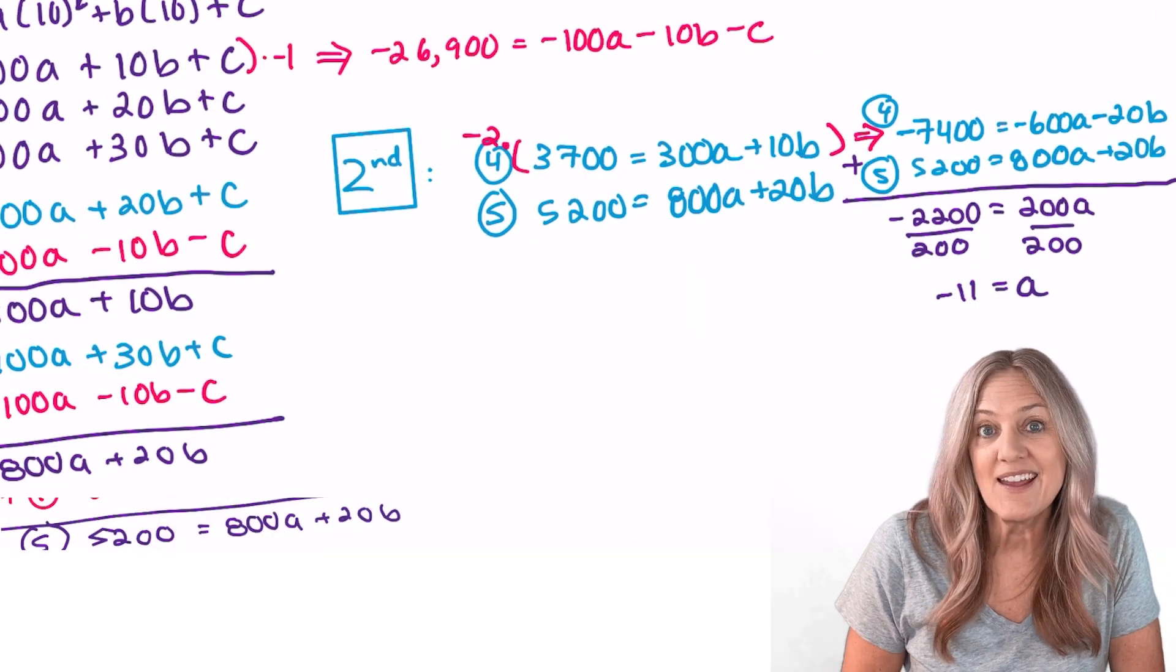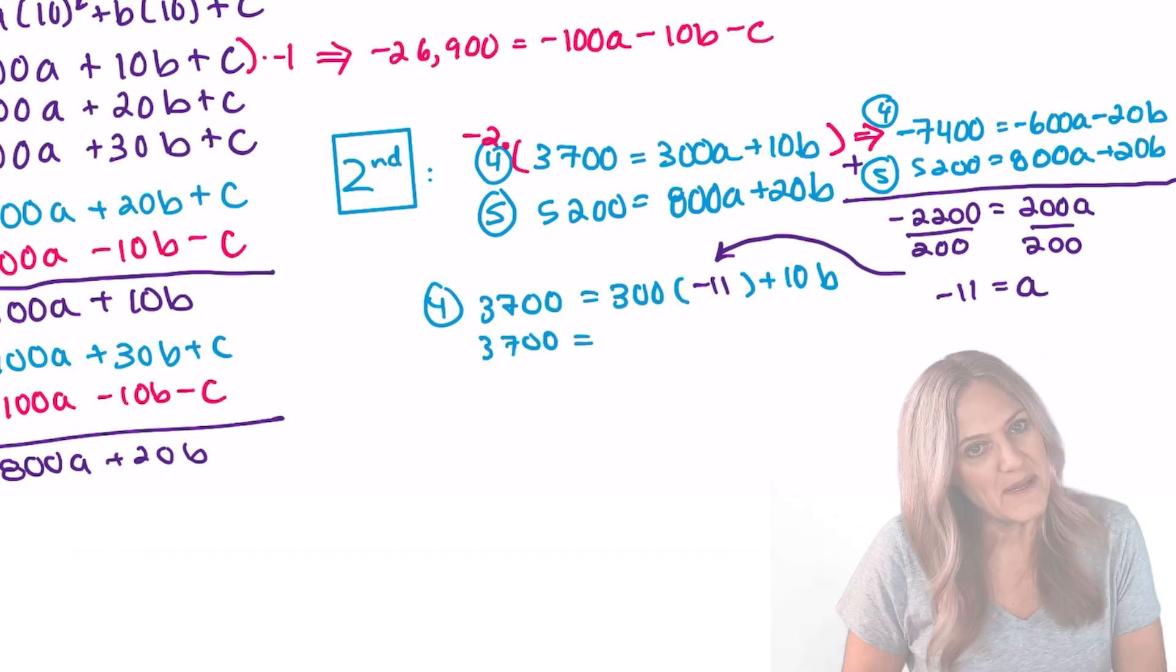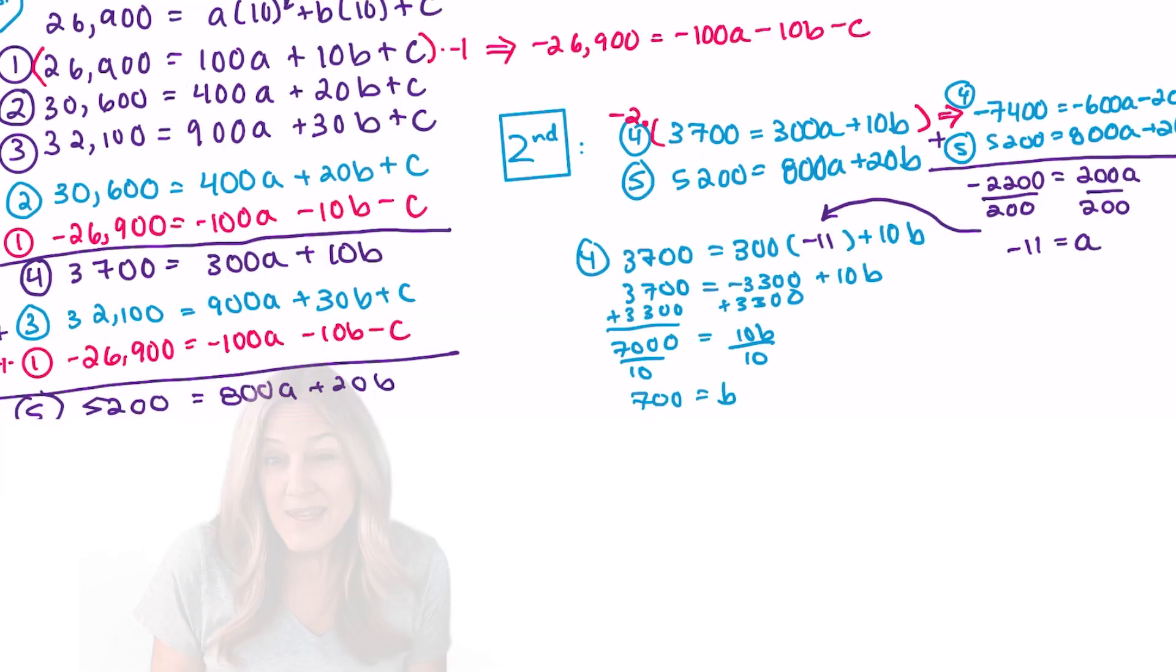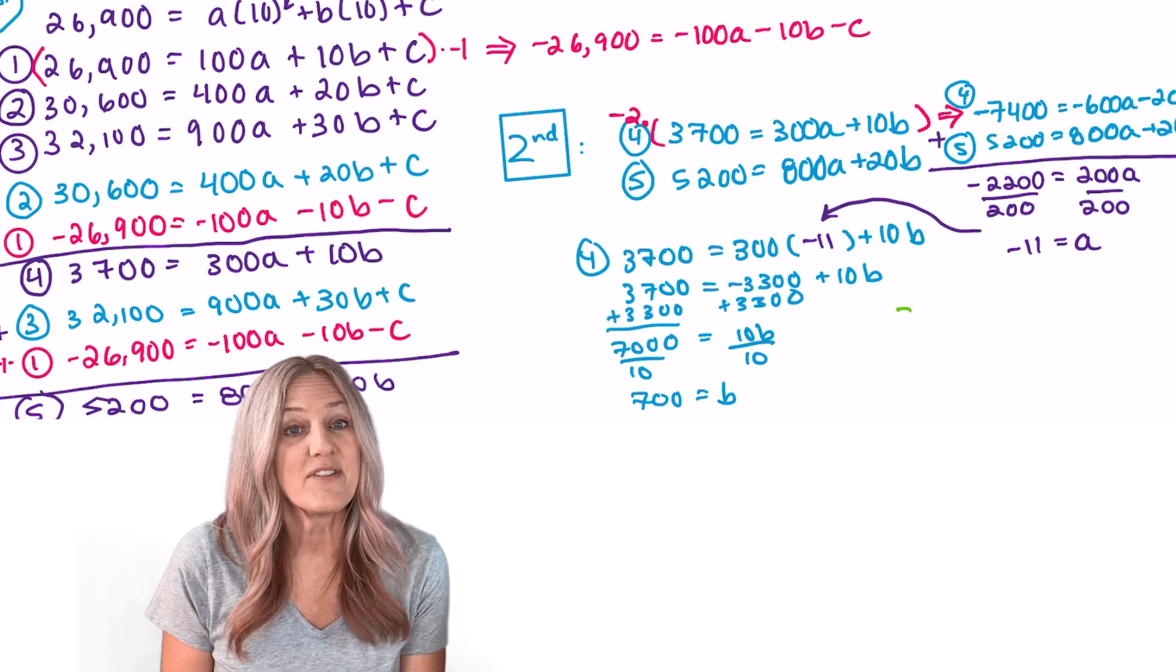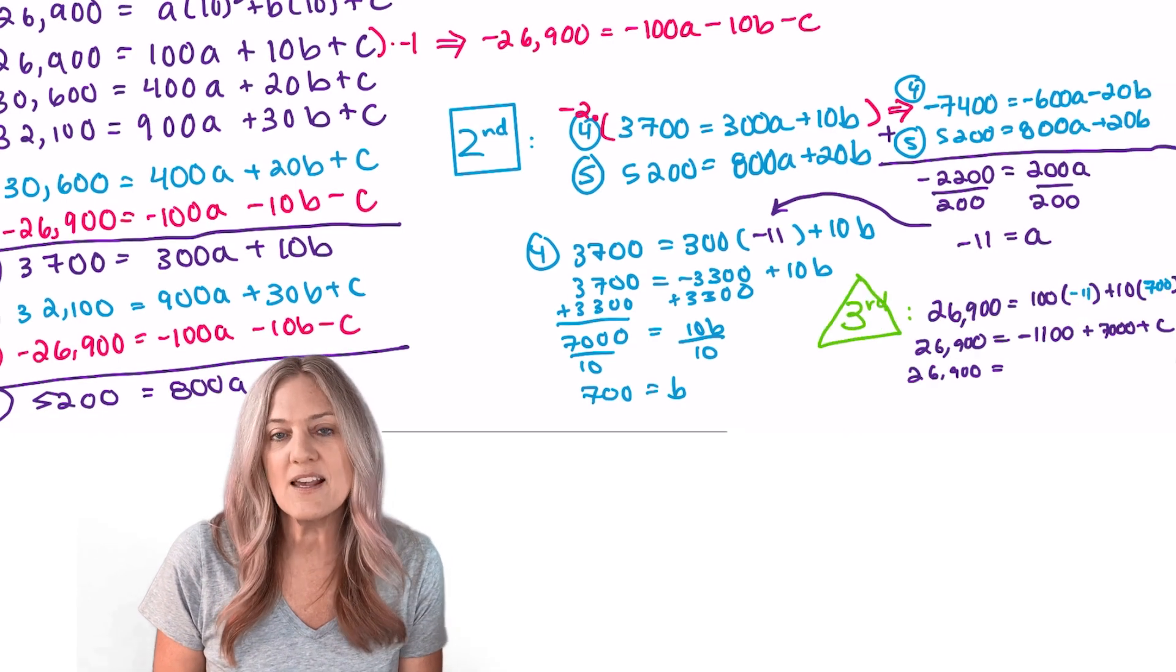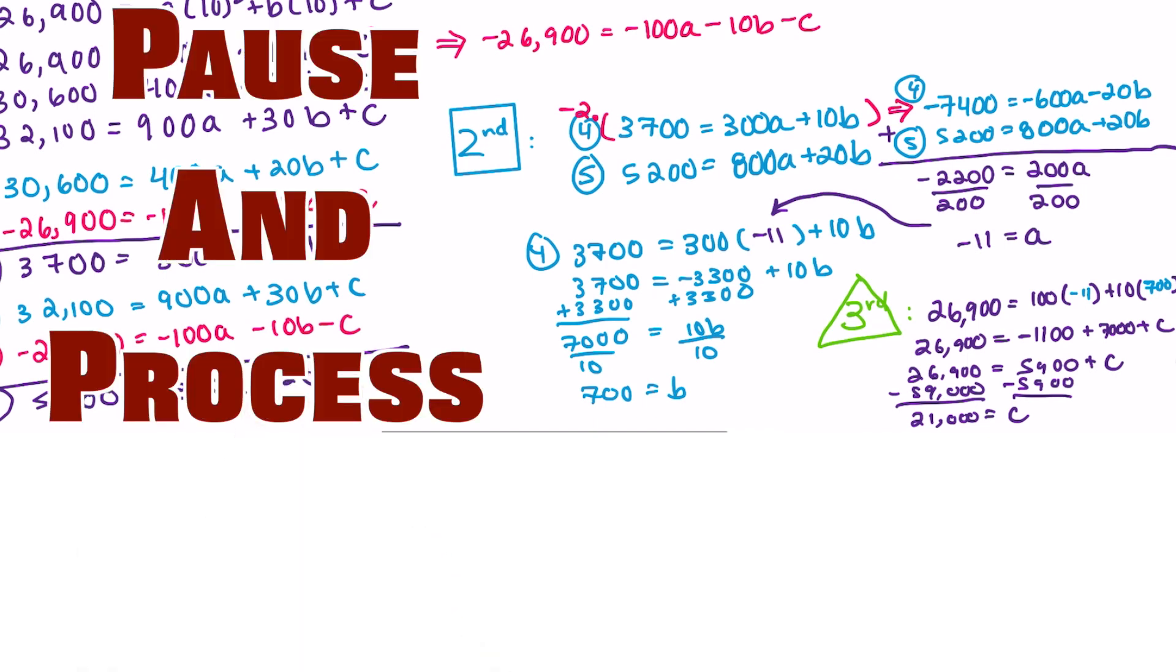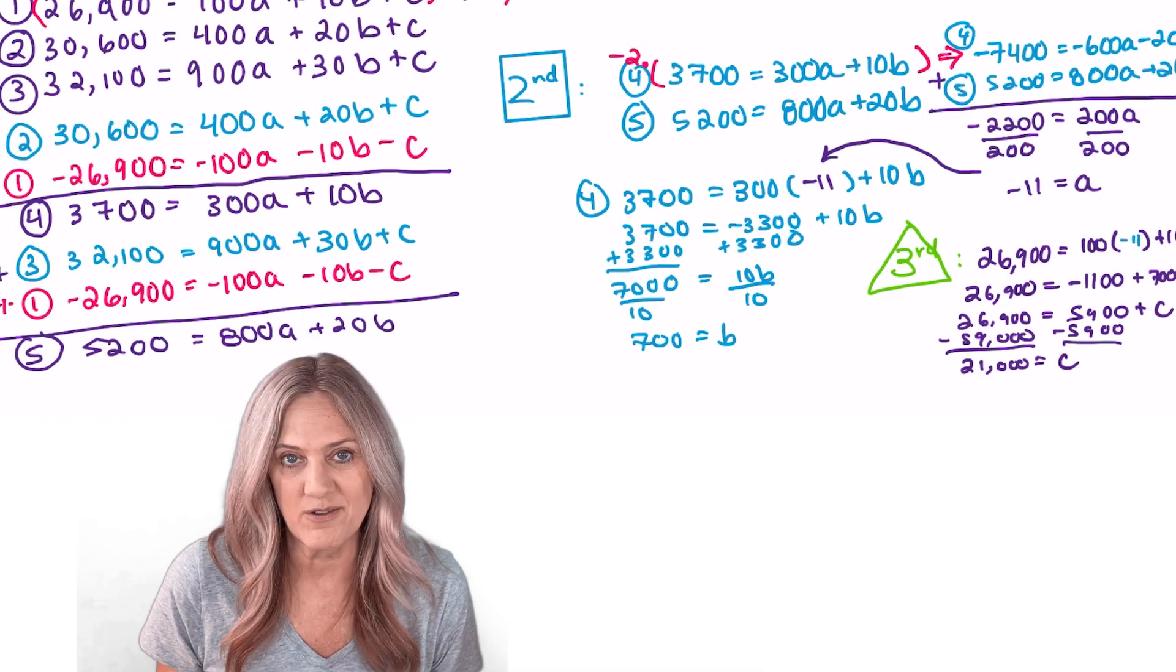Let's substitute the value for a into equation four and solve for b. b is 700. Now that I have the values for a and b let's substitute into our original equation one and solve for c. c equals 21,000.